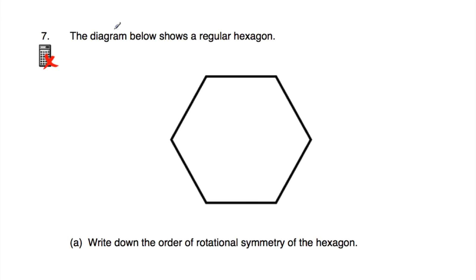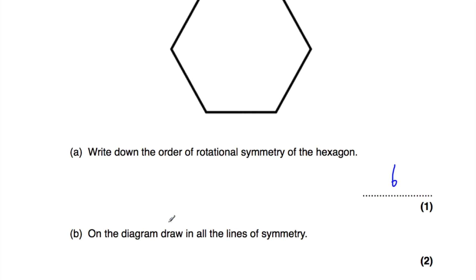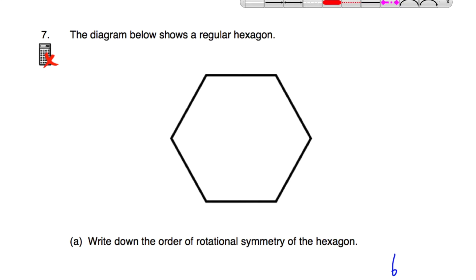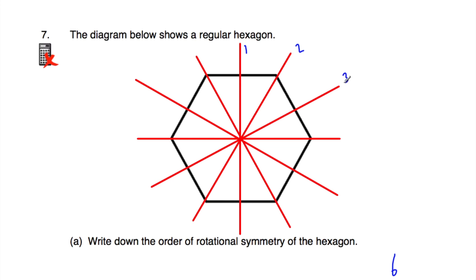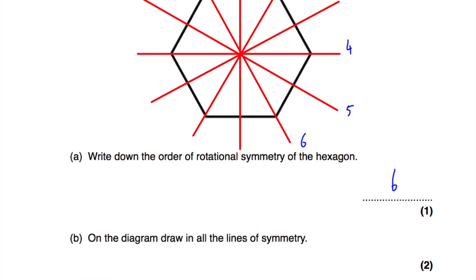Question number 7: we've been given a regular hexagon. Part A says write down the order of rotational symmetry. Because it's a regular hexagon, spinning it through 360 degrees it lands on itself 6 times, so the order of rotational symmetry is 6. Part B says draw all the lines of symmetry. A regular hexagon has 6 lines of symmetry, so we draw all 6 lines of symmetry on the shape.